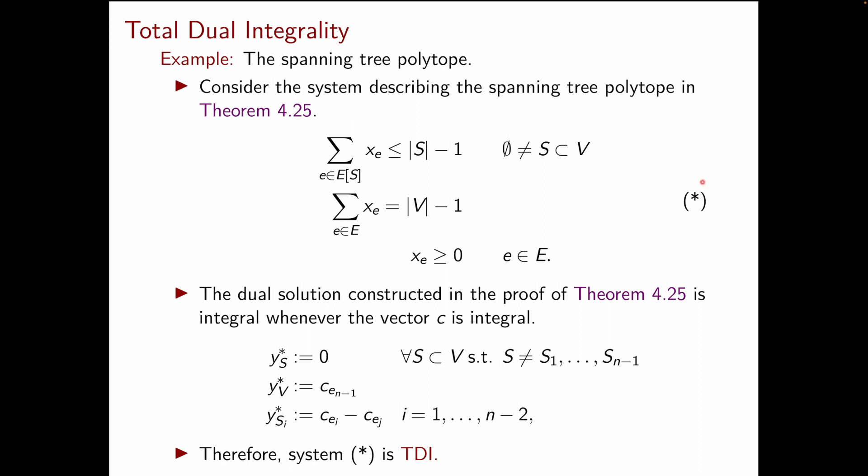We constructed the dual to our problem star, and we gave a feasible solution to the dual, y star. So at this point we had a feasible solution x star to the primal, given by Kruskal's algorithm, and a feasible solution y star to the dual problem. Then we used complementary slackness to show that x star was optimal to the primal and y star was optimal to the dual.